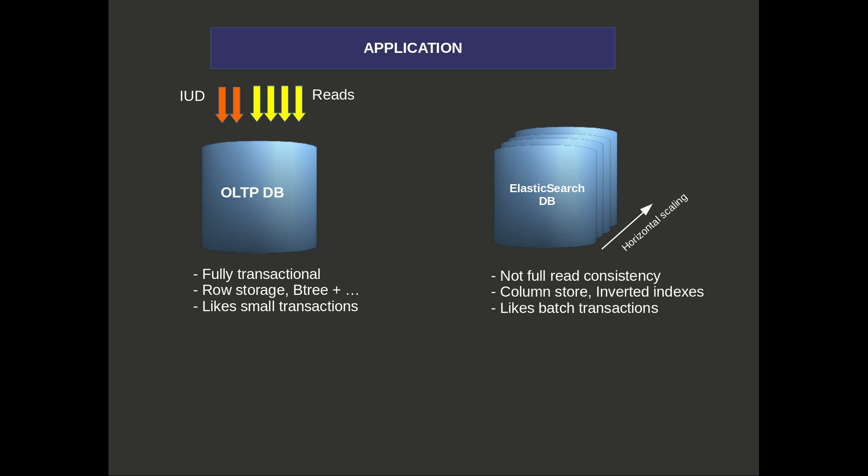What we're looking to do with eBean is to propagate insert, update, and delete requests from our OLTP database to Elasticsearch. With that we can move some of the read load over to Elasticsearch, and we get horizontal scalability — as the read load increases we can increase the size of the Elasticsearch cluster quite easily.